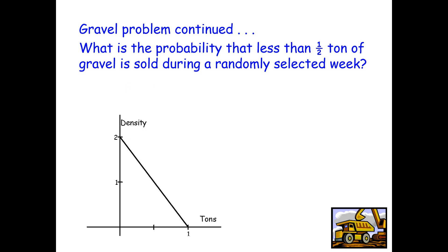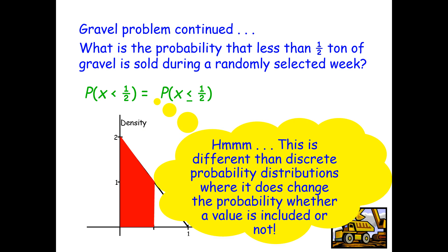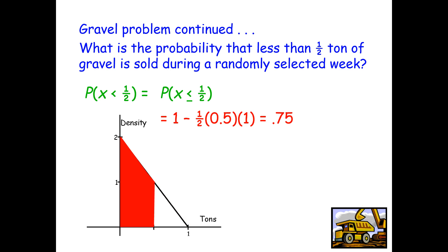So let's talk about what the probability is that less than half a ton of gravel is sold. Notice that here, we're just saying that x is less than 1 half. Now the question is, does the probability change whether the 1 half is included or not included? This is different than discrete probability distributions, where it does change the probability whether a value is included or not. Here, it doesn't matter. So our 1 minus our area of our triangle still applies. We get 0.75.